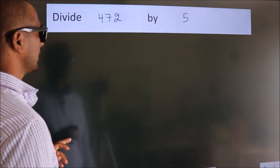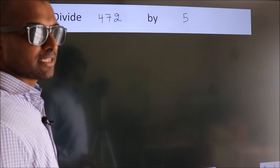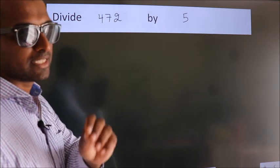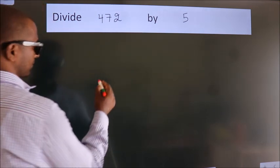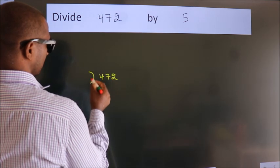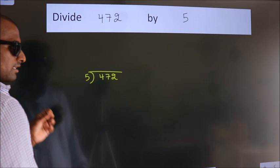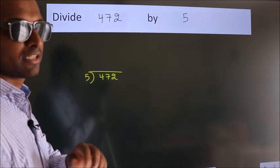Divide 472 by 5. To do this division, we should frame it in this way. 472 here, 5 here. This is your step 1. Next.